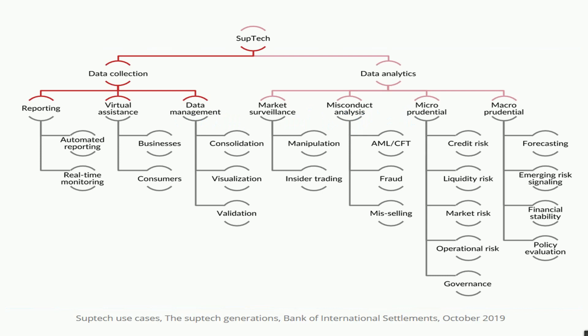SUPTECH helps in data collection and data analytics, which is very important for the regulator or supervisor, because these are the only two tools by which a regulator can identify whether there is non-compliance or not. Regulators analyze what regulated entities are doing, find inconsistencies, and if there is a severity or criticality, they fine or penalize that entity, revoke its license, or impose other restrictions depending on the nature of the non-compliance.